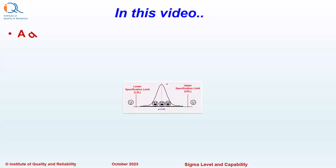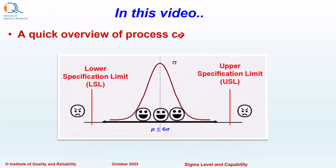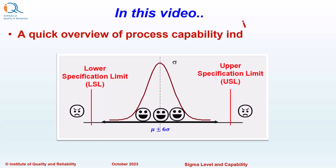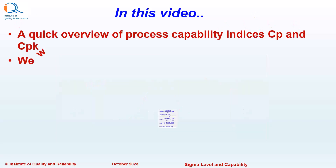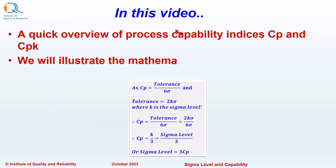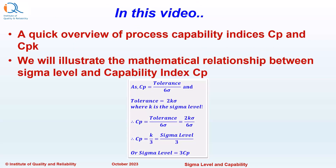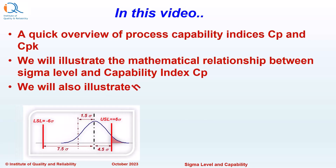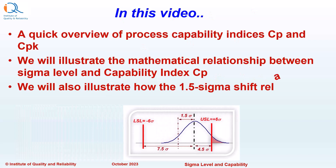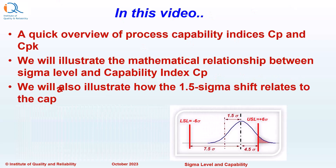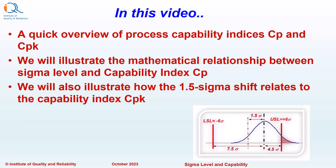In this video, we will have a quick overview of Process Capability Indices CP and CPK. We will then illustrate the mathematical relationship between Sigma Level and the Capability Index CP. We will also illustrate how the 1.5 Sigma shift relates to the Modified Capability Index CPK.